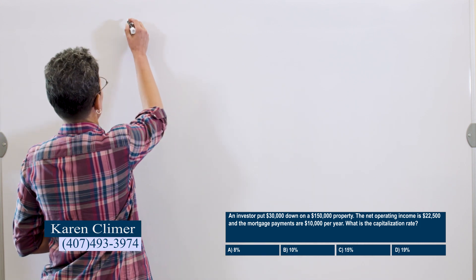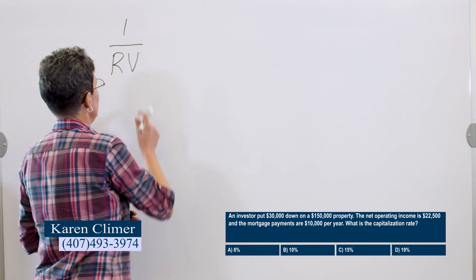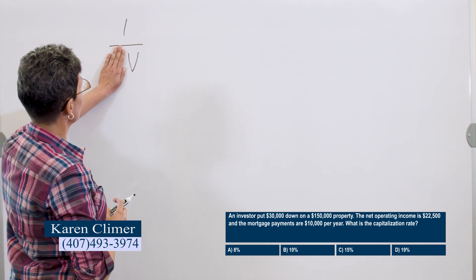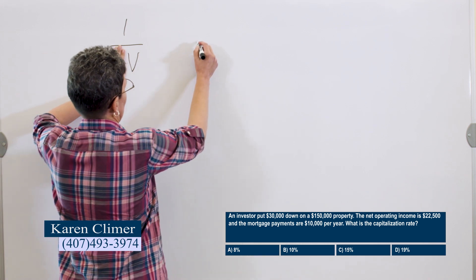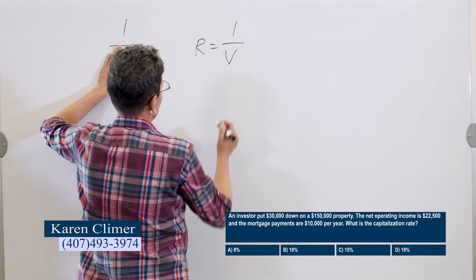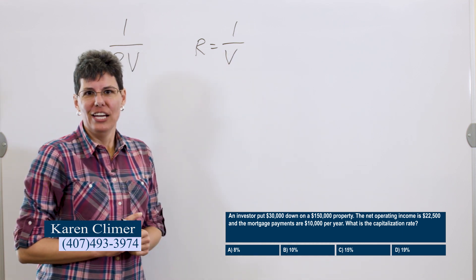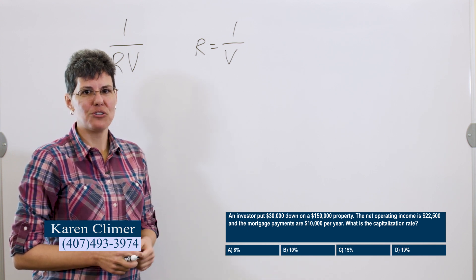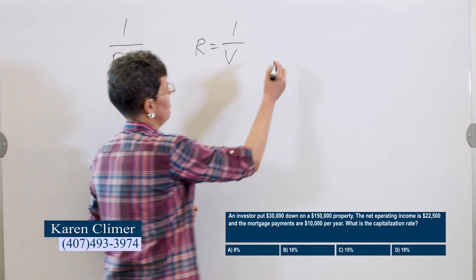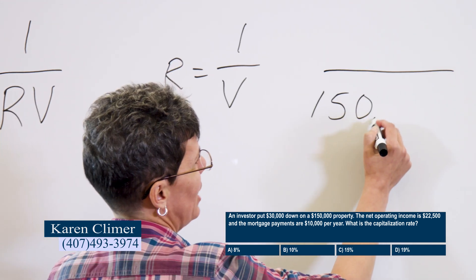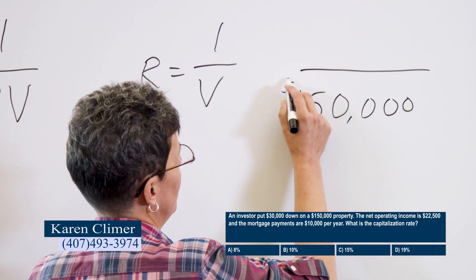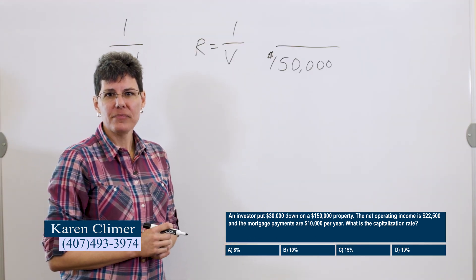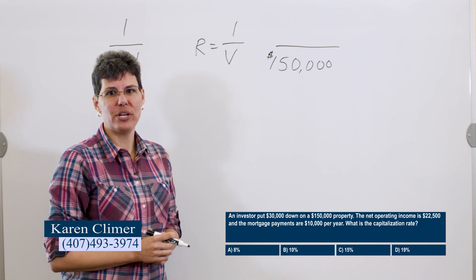Just like before, the formula is I over RV. But in this case, we're looking for rate, the capitalization rate. So we're going to cover that up. And that's the formula, I over V. So the investor put $30,000 down on a $150,000 property. So the value is $150,000. The amount he put down is irrelevant. The value, the price is the same no matter how much he puts down.